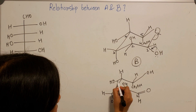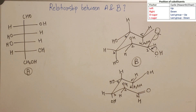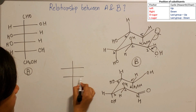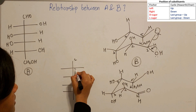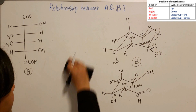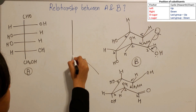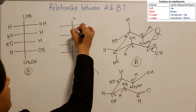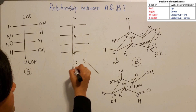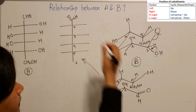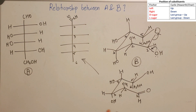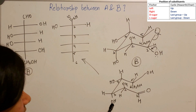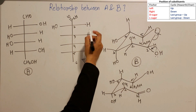Number the open-chain form: one, two, three, four, five, six. Using the table rules, draw the Fischer form for this hexose sugar. Carbon one is the aldehyde (CHO). Carbon two — hydroxy on top in the cyclic form means it goes on the left in the Fischer form. Carbon three — hydroxy down means it goes on the right. Carbon four — hydroxy down again means right.